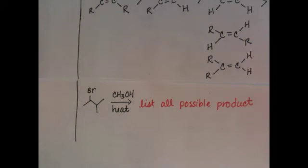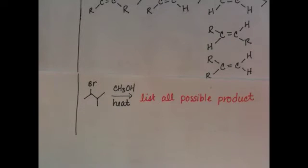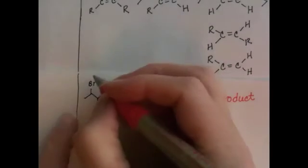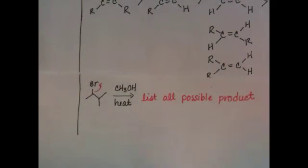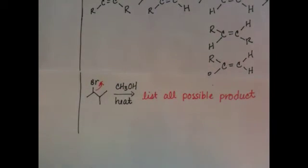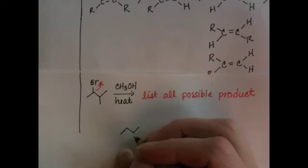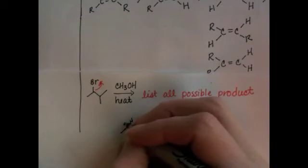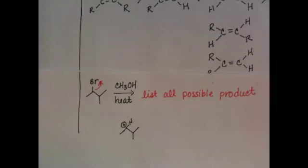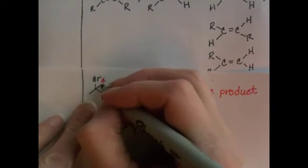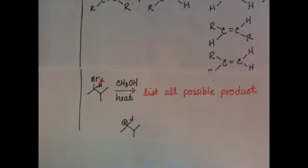So in drawing this out, what we want to do is start by forming the carbocation because that's always the first step, whether we're looking at an E1 or an SN1, get rid of that leaving group and make the carbocation. Like that. And then I drew that hydrogen in. It was here.